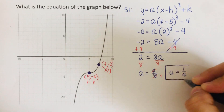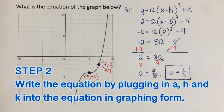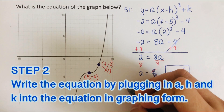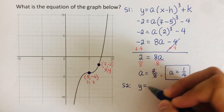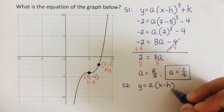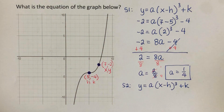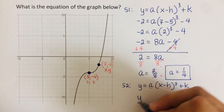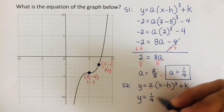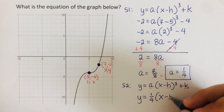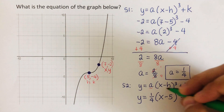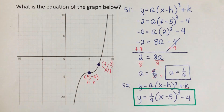Now we move on to step 2: write the equation by plugging in A, H, and K only into the equation in graphing form. Y equals A times parentheses X minus H cubed plus K. Our A is 1 fourth, our H is 5, and our K is negative 4. So the final equation is Y equals 1 fourth times X minus 5 cubed minus 4. This is our equation in graphing form for this graph.